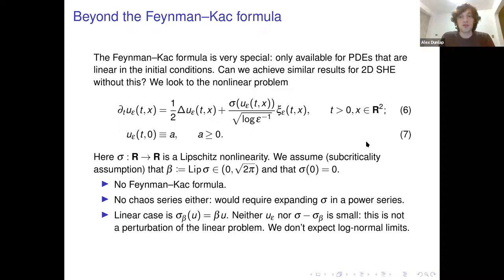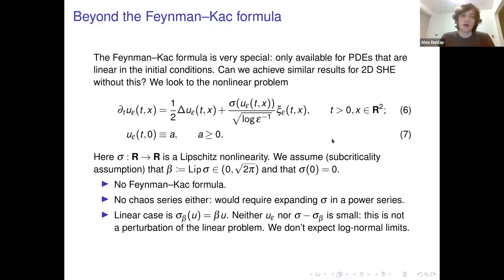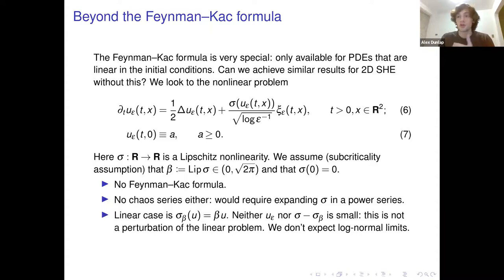The prototypical model we considered that has this nonlinear property is the nonlinear 2D stochastic equation — the same as the linear stochastic equation except that instead of multiplying the noise by u_epsilon, we multiply by some nonlinear function sigma of u_epsilon. We start at a constant initial condition. In parallel with the requirement that beta be less than square root of 2π, we impose that sigma is Lipschitz with Lipschitz constant less than square root of 2π, and that sigma(0) = 0.